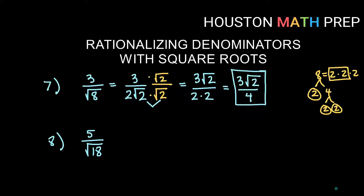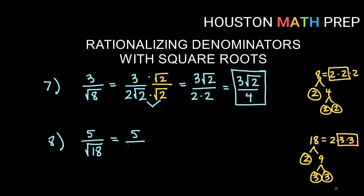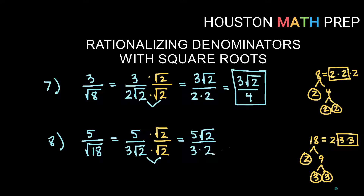For number eight, five over root 18 — a similar idea. Root 18 can be simplified: 18 is two times nine, and nine breaks down into three times three. So 18 is two times three times three, and I have a pair of threes, so I can pull out a three and leave the two inside, giving three root two. The problem becomes five over three root two. We still need to rationalize, so multiply by root two on top and bottom. The numerator is five root two; the denominator is three times two equals six. The answer is five root two over six.